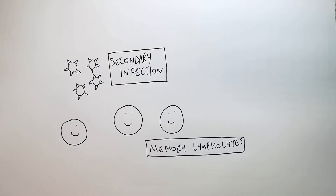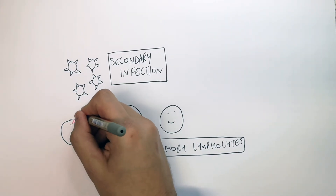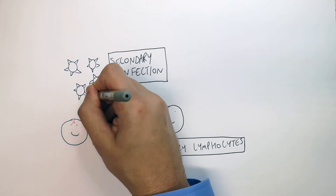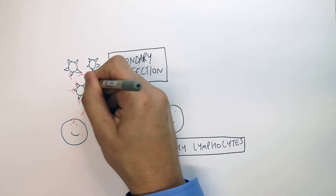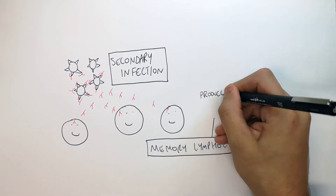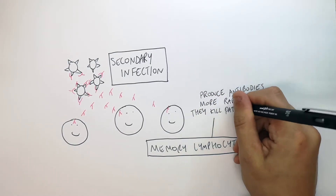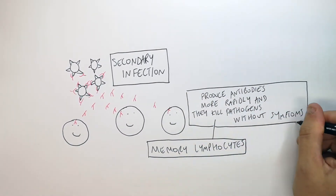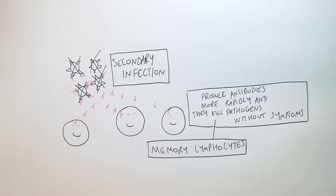When you get a secondary infection of that pathogen, the memory lymphocytes in your blood will very quickly produce antibodies that will bind the antigens of the pathogen you were vaccinated against. The memory lymphocytes produce antibodies more rapidly and they kill the pathogens without symptoms, so you will not get any symptoms.